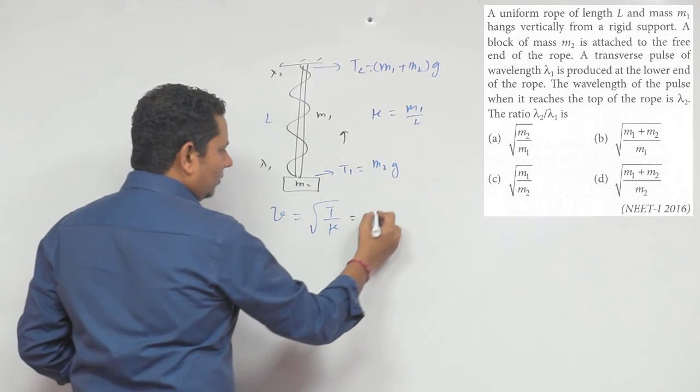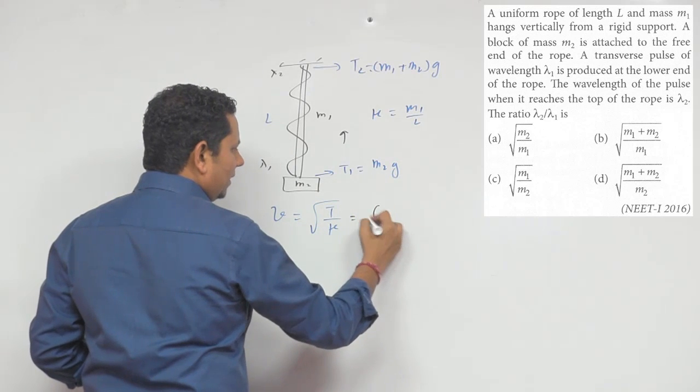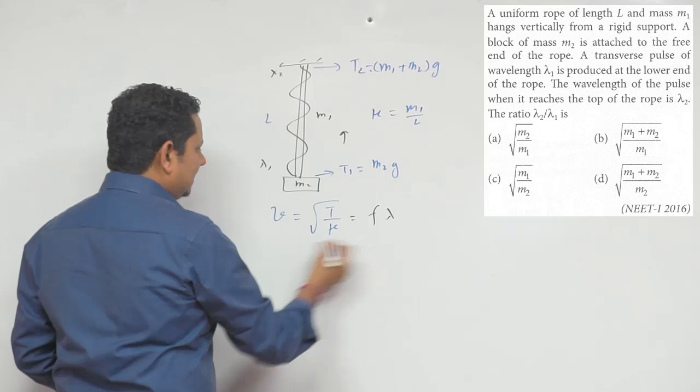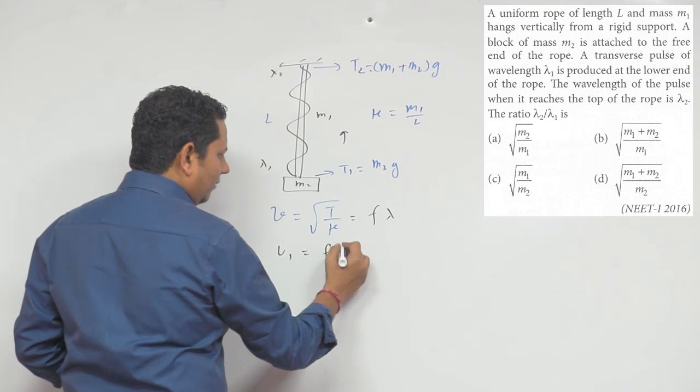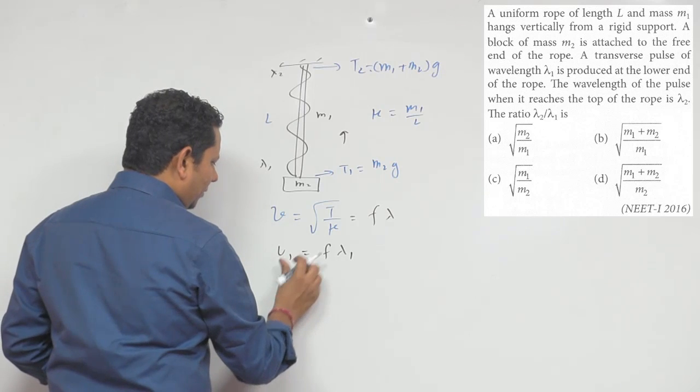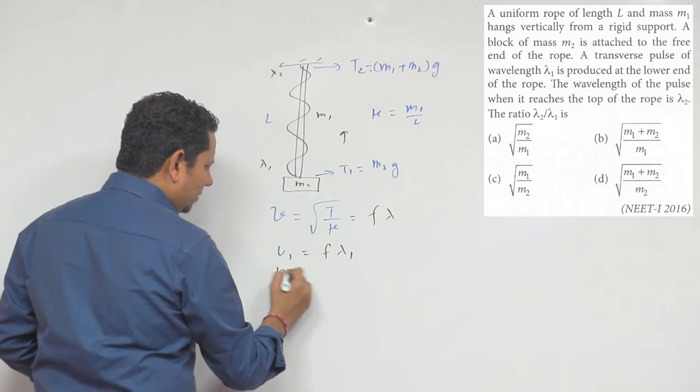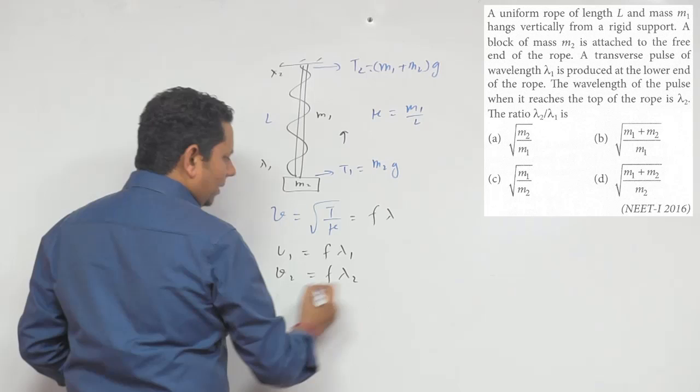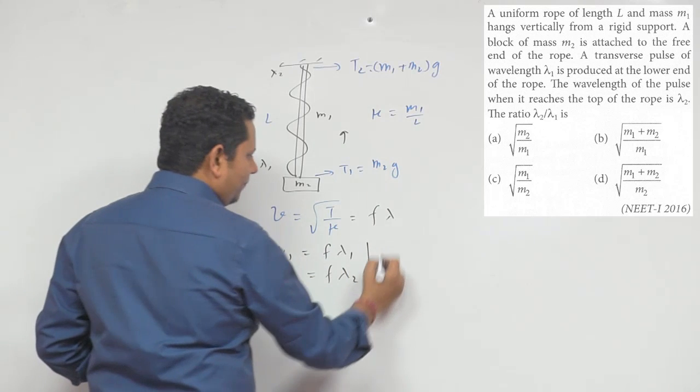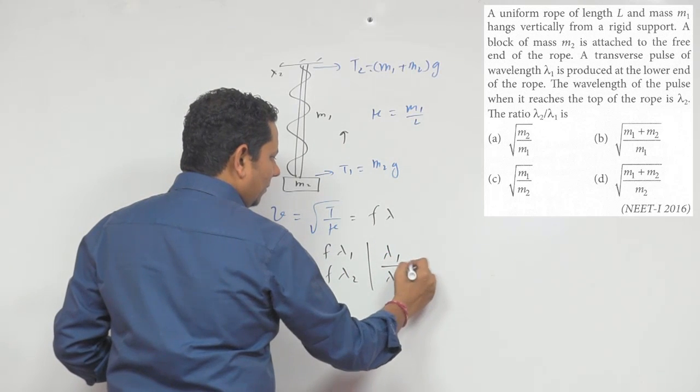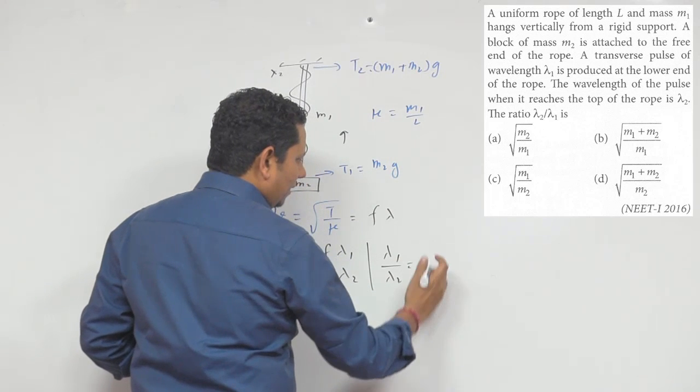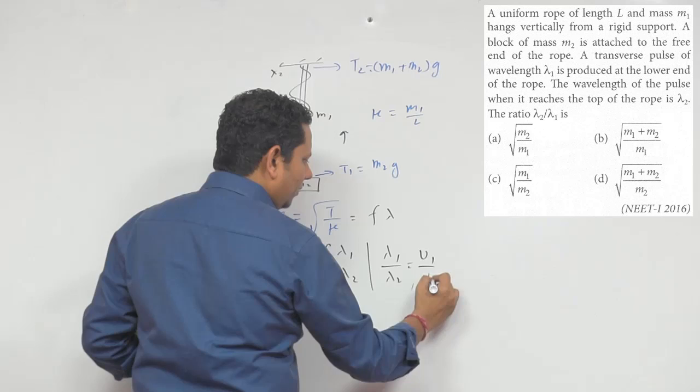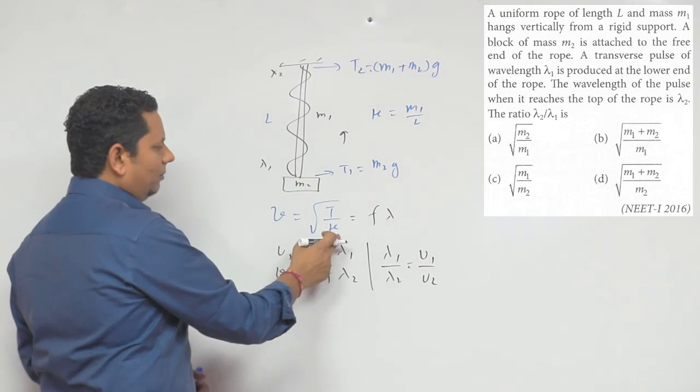Since velocity equals square root of T by mu, and we can write V equals f lambda, we have V1 equals f lambda 1 and V2 equals f lambda 2. Taking the ratio, lambda 1 divided by lambda 2 equals V1 by V2, which equals the square root of T1 divided by T2, since mu is constant.